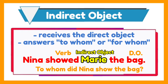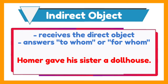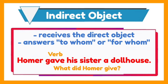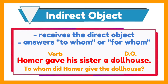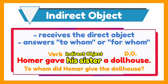Another example: Homer gave his sister a dollhouse. The verb is gave. What did Homer give? A dollhouse — so that is the direct object. And to whom did Homer give the dollhouse? To his sister. Therefore, his sister is the indirect object.